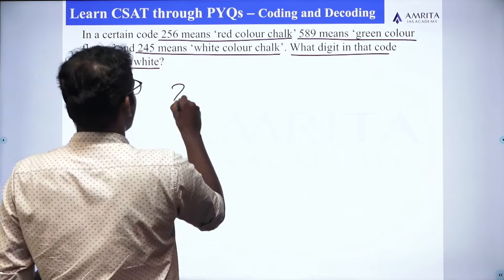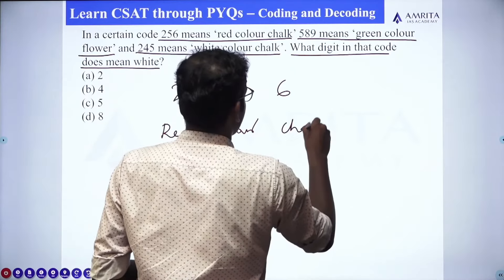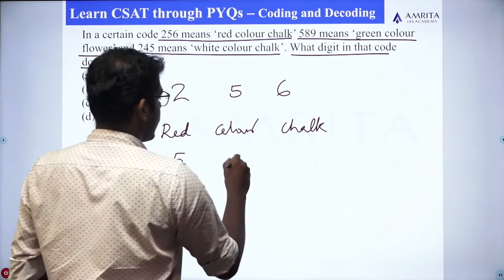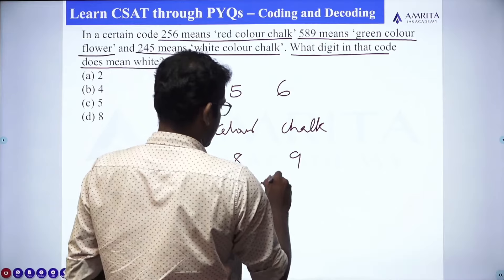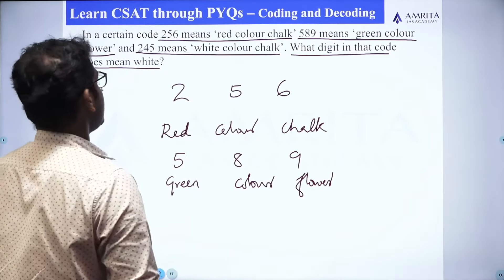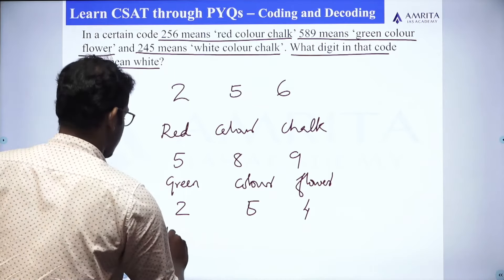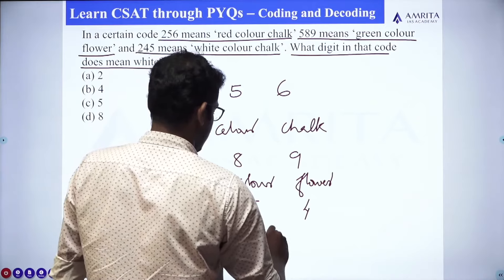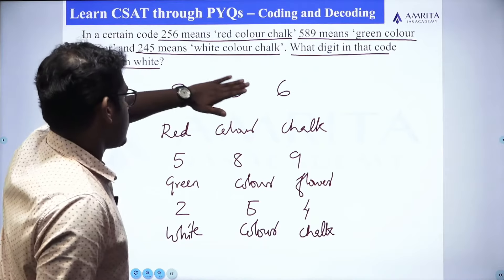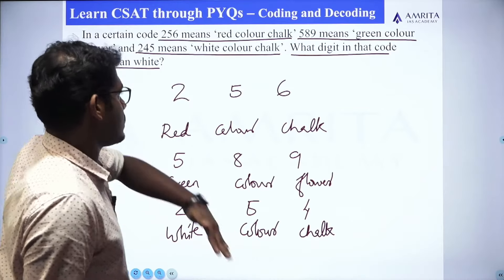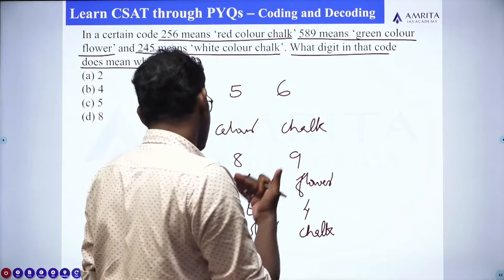So: 2-5-6 means red color chalk. 5-8-9 means green color flower. 2-4-5 means white color chalk. Red color chalk is coded as 2-5-6, green color flower is coded as 5-8-9, and white color chalk is coded as 2-5-4. We have to first understand each respective code number.